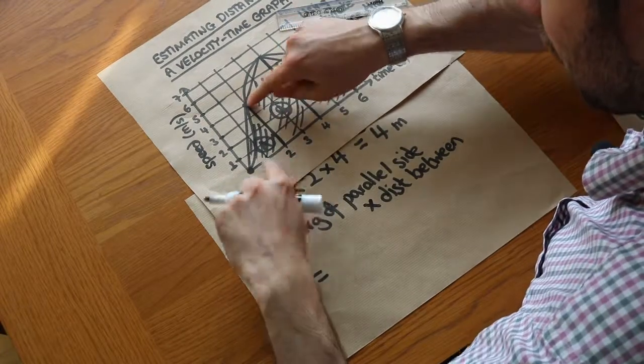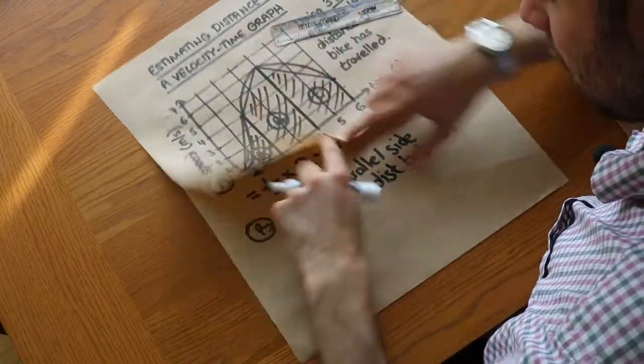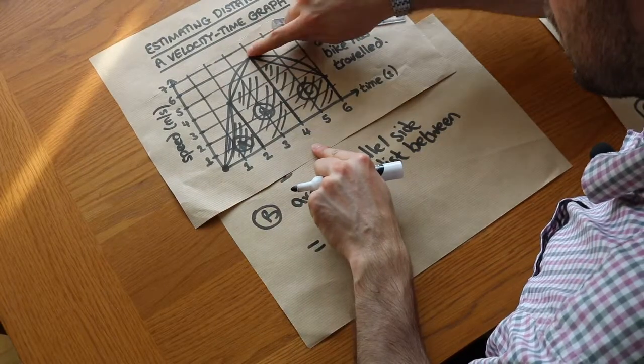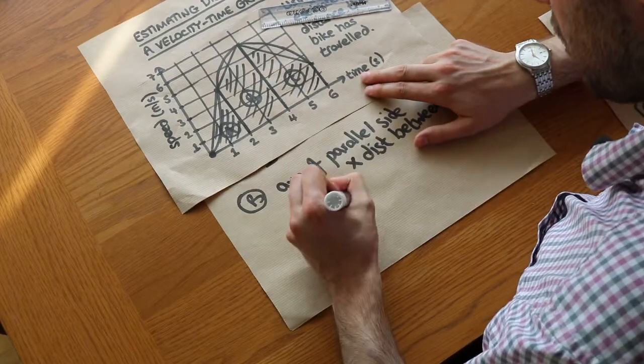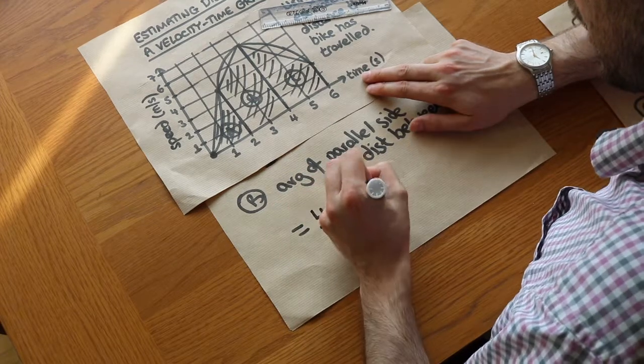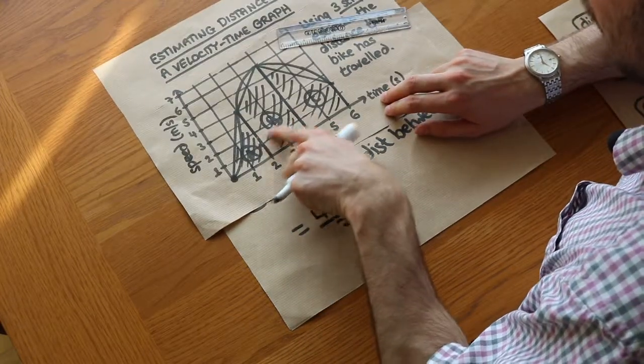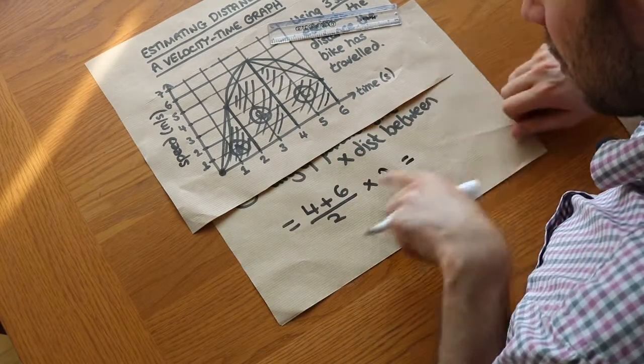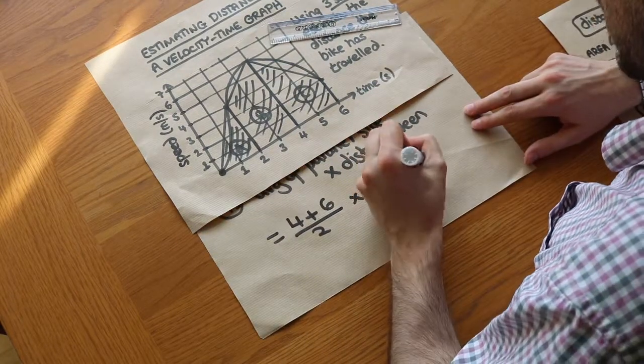So what is that distance there? Well that's four, we can see from here. So that's four plus this height here which is six. We're going to divide that by two because we're averaging it, and we're timesing the distance between the parallel sides which is two. So that gives you five times two which is ten meters.